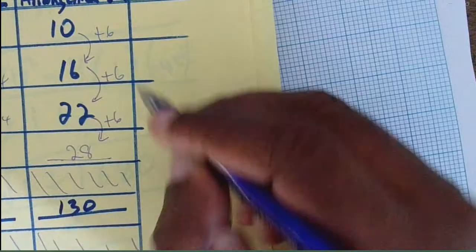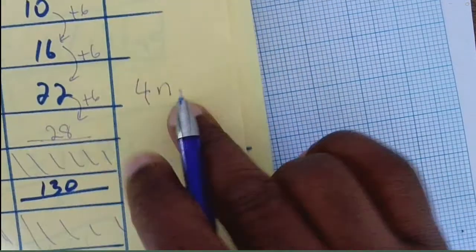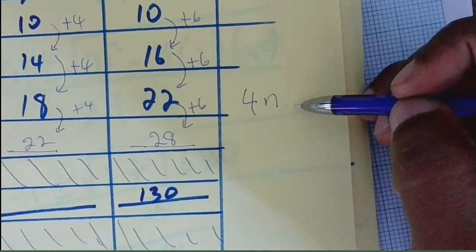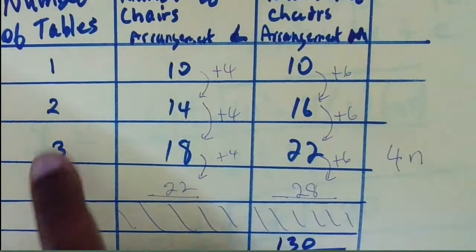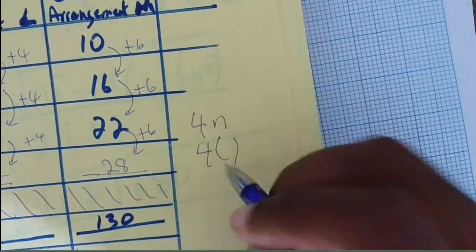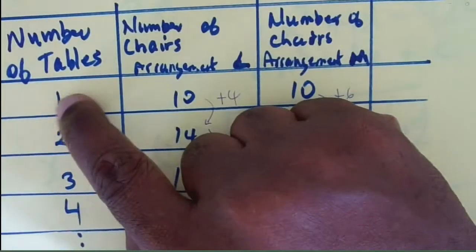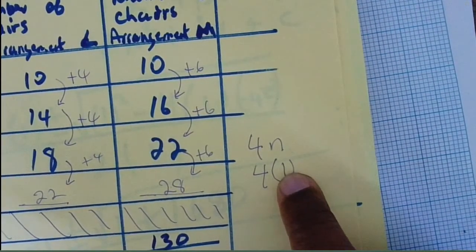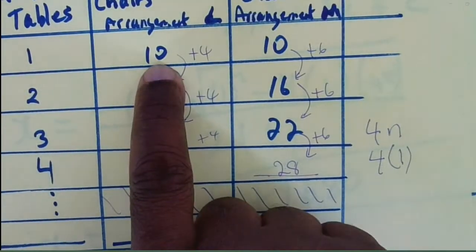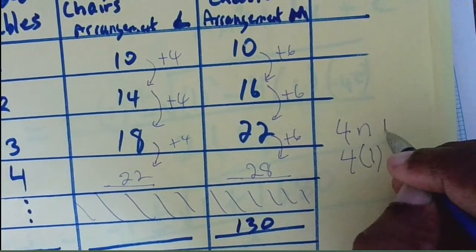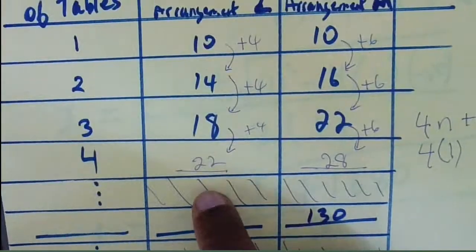We put 4 — that's the common difference — and multiply by n. Then we decide whether to add or subtract a number. The figure number here is 1, so we replace n with 1: 4 times 1 is 4. But we don't get 10, we get 4. So we need to add more to that formula — 4n alone doesn't work.